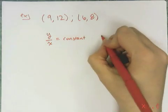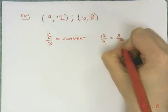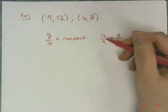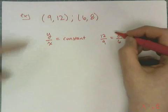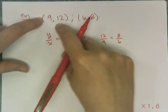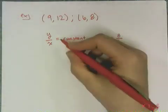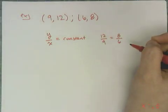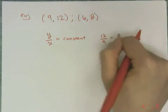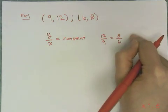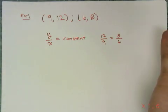So what I'm looking for is 12 over 9 equal to 8 over 6. That's a proportion made up of these two points: (9, 12) gives us 12 over 9, and (6, 8) gives us 8 over 6. I made a y over x ratio. If something is directly proportional, I can set up these kinds of ratios, and they're all going to be equal to each other if the relationship is indeed directly proportional.